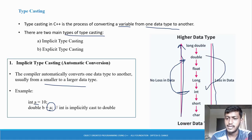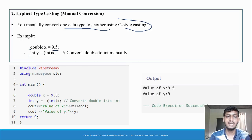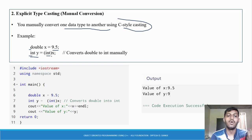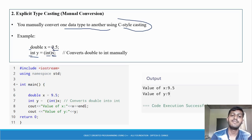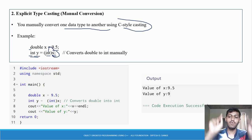We are converting from double to integer — from a larger data type to a smaller data type. double x is equal to 9.5. To convert it to integer, declare integer variable 'y' and write: (integer) x. Put the target data type in round brackets before the variable you want to convert, and store the result in 'y'.